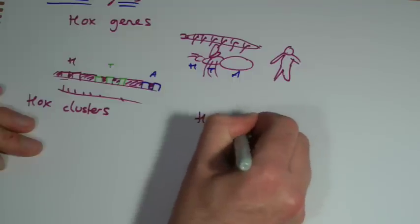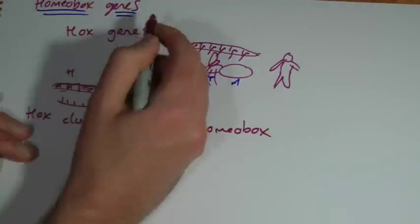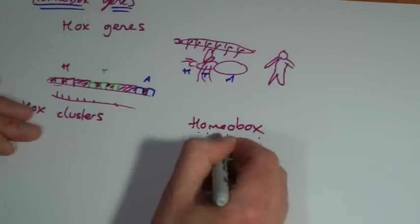Now, the confusing part is, there's something called a homeobox. Now you might say, we've just done homeobox, we've done homeobox genes. Well, a homeobox is something slightly different.